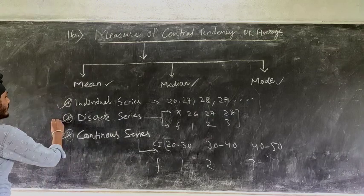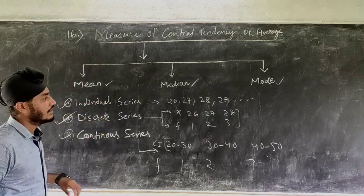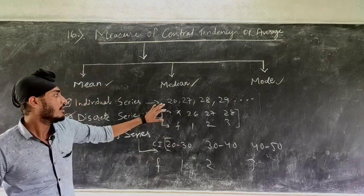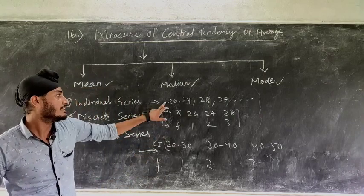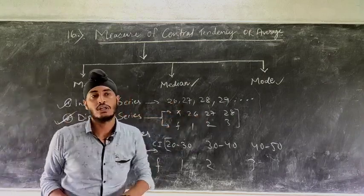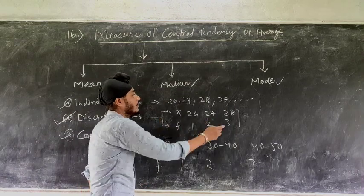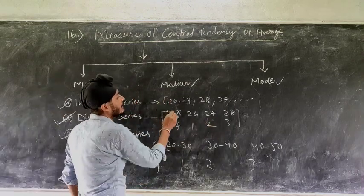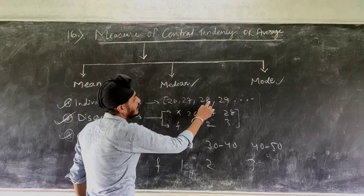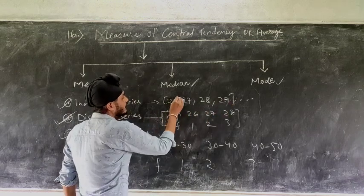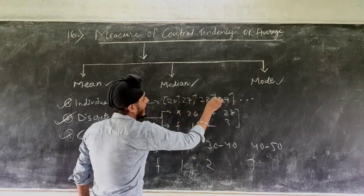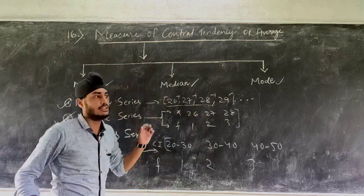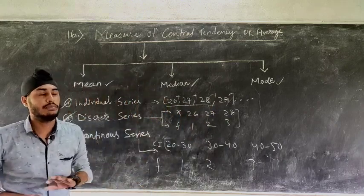Individual series is very easy — it is like finding an average. Suppose you are asked to find the mean of 26, 27, 28 and 29. You simply add all the values and divide by the number of observations — that is, divide by 4. This is individual series; it is simply like average.